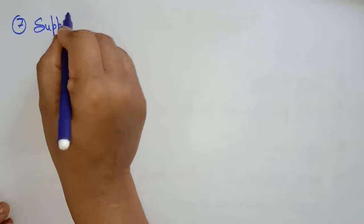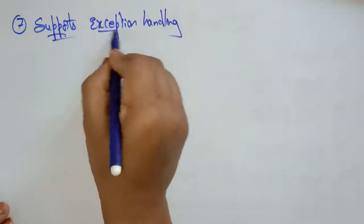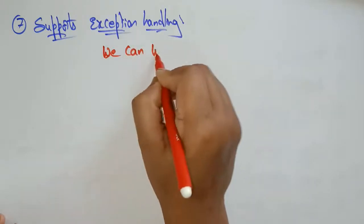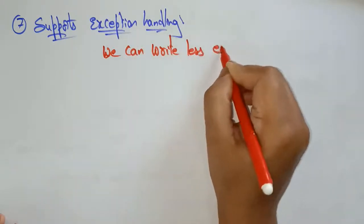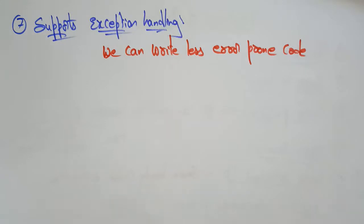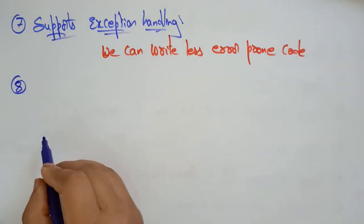The next feature is supports exception handling. The Python language supports exception handling, which means we can write less error-prone code and can test various scenarios that can cause exceptions. Just like in Java where you use try-catch for exceptions, the same exception handling can be used in Python as well.